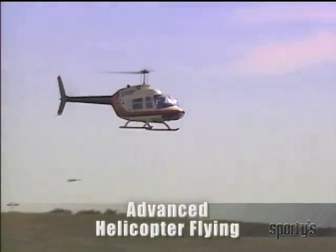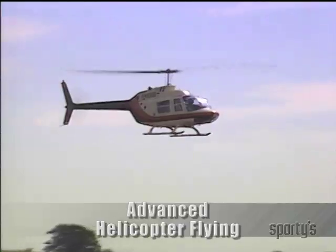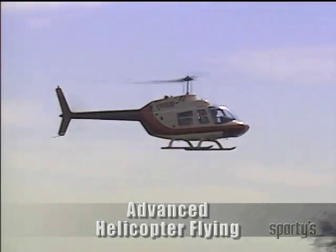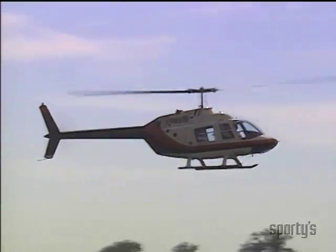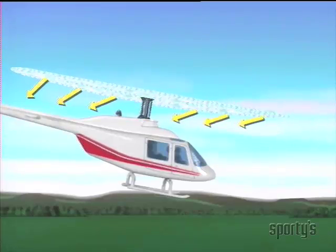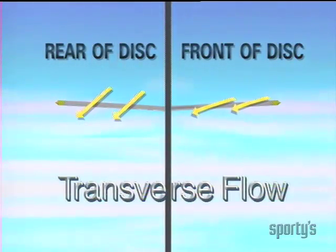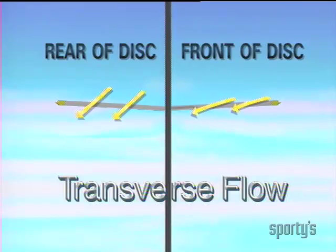When you're in forward flight, air passing through the rear portion of the rotor disc has been accelerated for a longer period of time than that in the front. Therefore, air passing through the rear portion has a higher downwash velocity, and therefore a greater induced flow angle than the air passing through the forward portion of the disc. This difference is called transverse flow effect, and is the combination of a couple of factors, most pronounced at airspeeds of 10 to 20 knots.